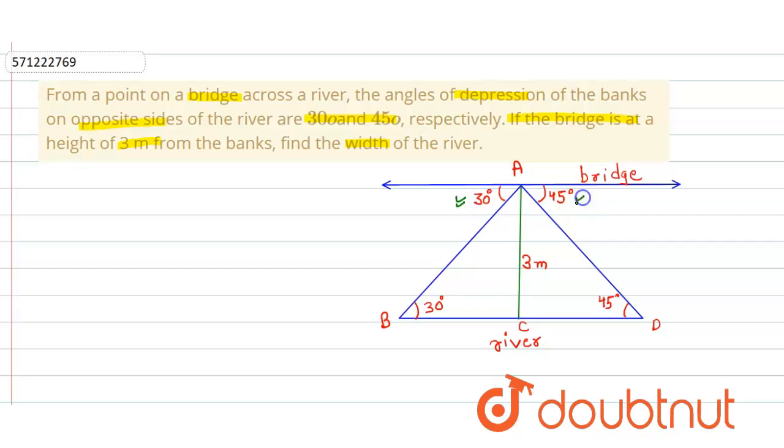As you can see in the given figure, the angle of depression is 30 degrees and 45 degrees, and the bridge is at the height of 3 meter. We have considered this to be the bridge and that's the river. Here we apply the trigonometric ratios in the two right angle triangles.